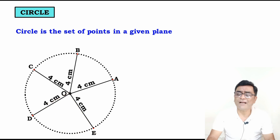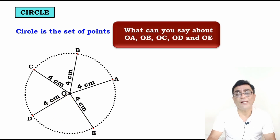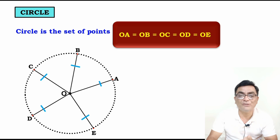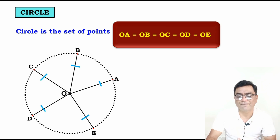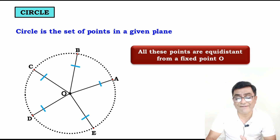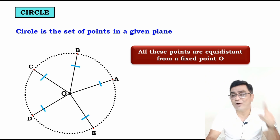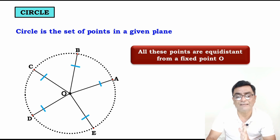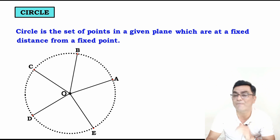So all these points are equidistant from a fixed point O. Now we can complete the definition: circle is the set of points in a given plane which are at a fixed distance from a fixed point. This fixed distance is called the radius. OE is the radius.